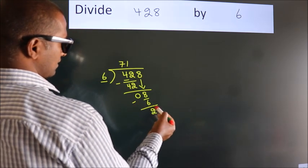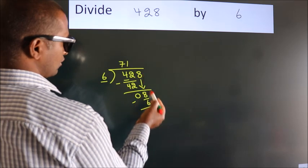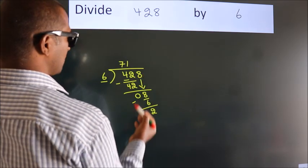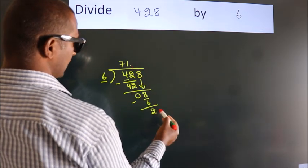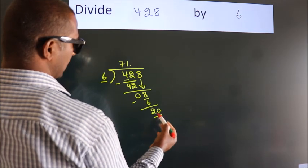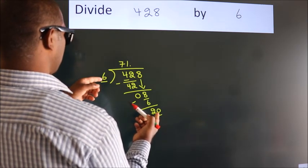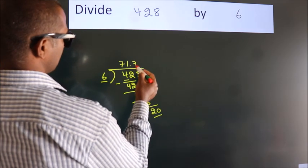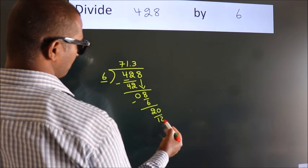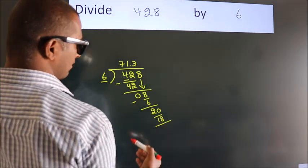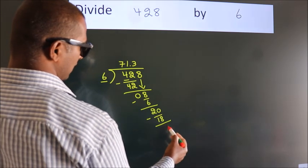After this, no more numbers to bring down. So what we do is, we put a dot and take 0. So 20. A number close to 20 in the 6 table is 6 3s, 18. Now we subtract. We get 2.